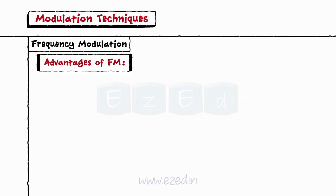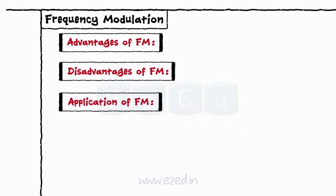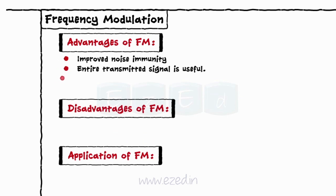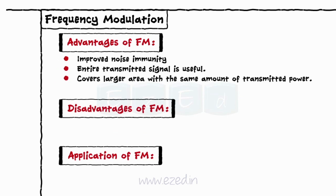The advantages, disadvantages, and applications of frequency modulation are as follows. Advantages of frequency modulation: improved noise immunity, entire transmitted signal is useful, covers a larger area with the same amount of transmitted power, and transmitted power remains constant.